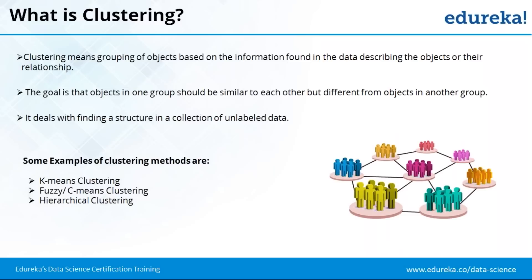The goal is that objects in one group should be similar to each other, but significantly different from objects in another group. That's the crux of clustering. You need a tight community called a group, and there should be a good amount of difference between the clusters — different groups. It deals with finding structure in a collection of unlabeled data. Some examples of clustering methods are K-Means clustering, fuzzy or C-Means clustering, and hierarchical clustering. Particularly in software like R, which has 4,000 packages, you are bound to see many clustering methodologies.